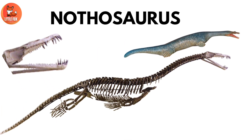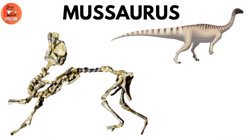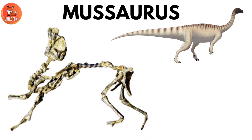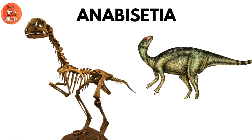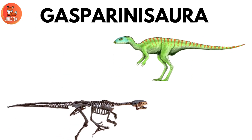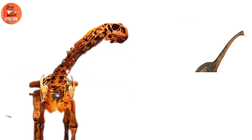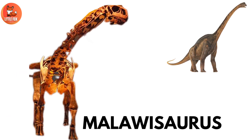Number 26: Nothosaurus. Number 27: Musiurus. Number 28: Anabysentia. Number 29: Gasparini-Sora. Number 30: Malawi-Saurus.